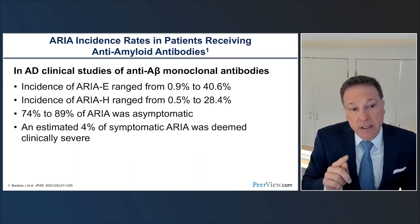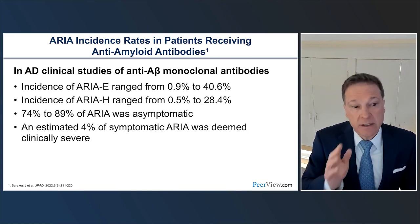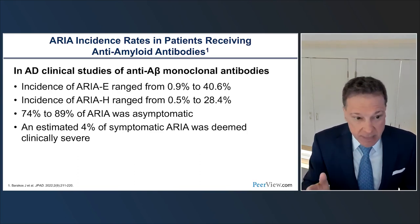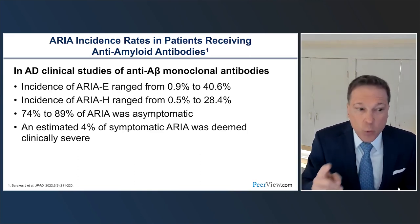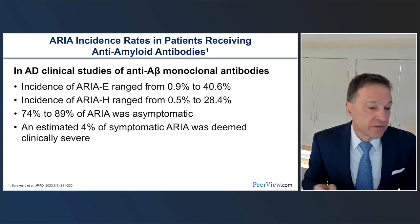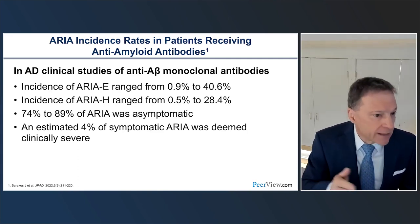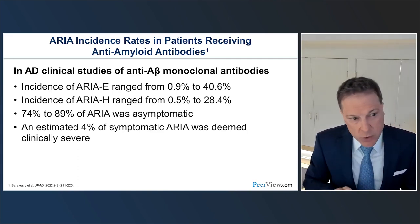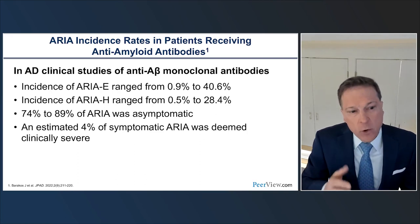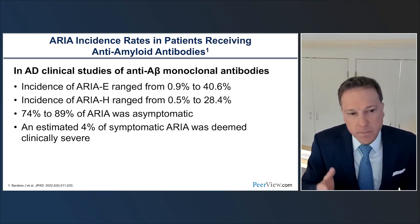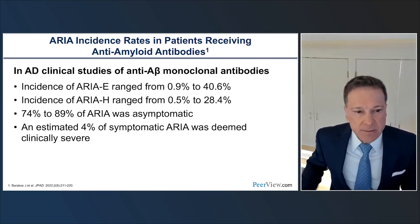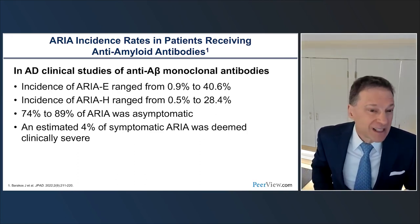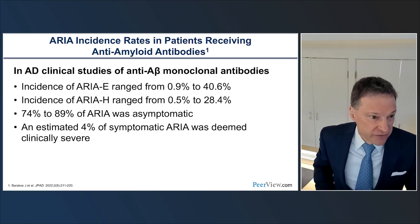Routine surveillance imaging is performed while the patient is given drugs over many months or years of treatment. If abnormalities develop, we as radiologists must communicate those to the clinicians so they can adjust dosage or suspend treatment until findings stabilize or resolve. Not only is the majority of ARIA asymptomatic, but when symptomatic, the majority of symptoms are mild or moderate — only about 4% of symptomatic ARIA was deemed clinically severe.